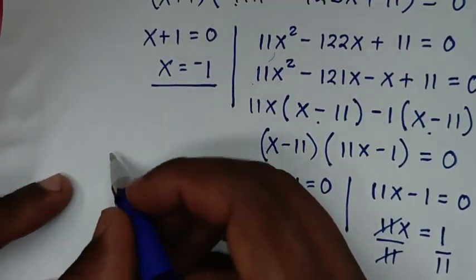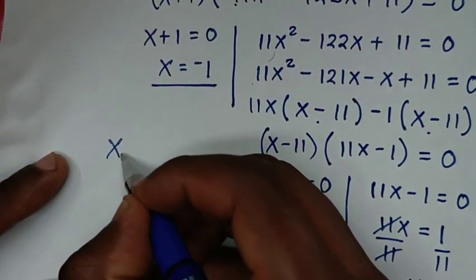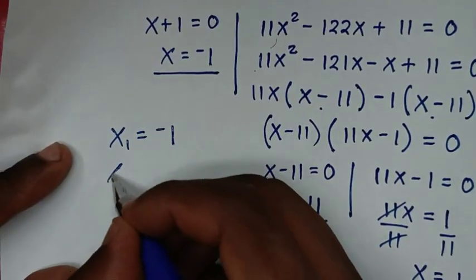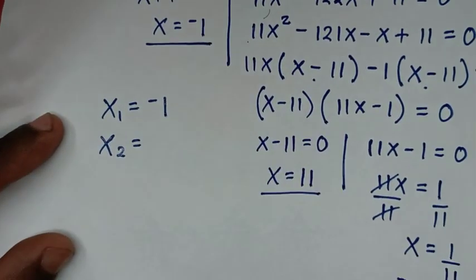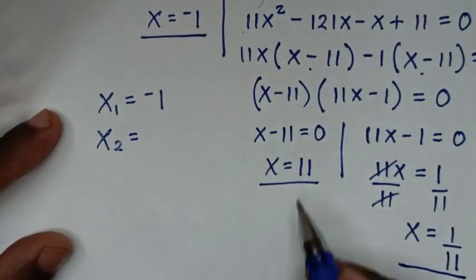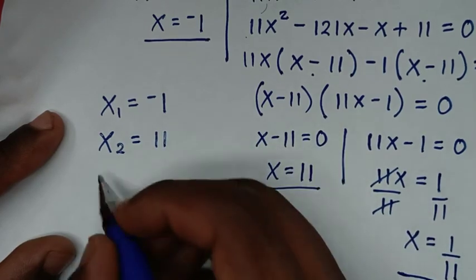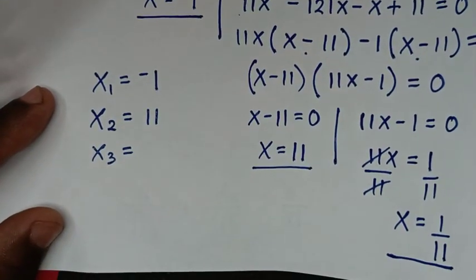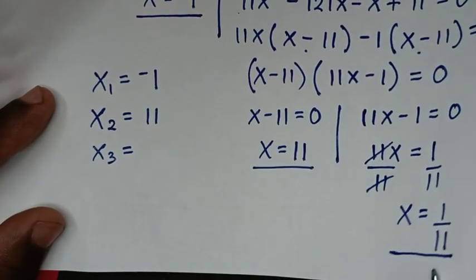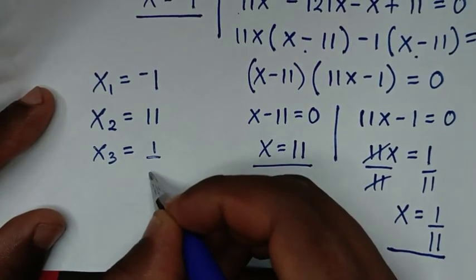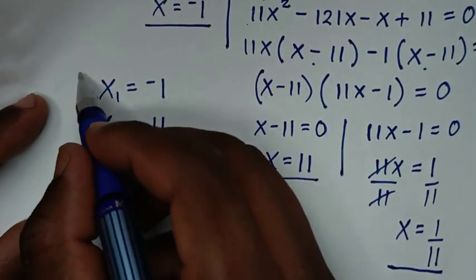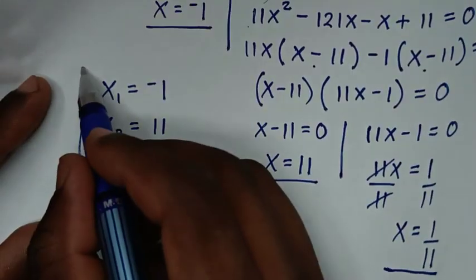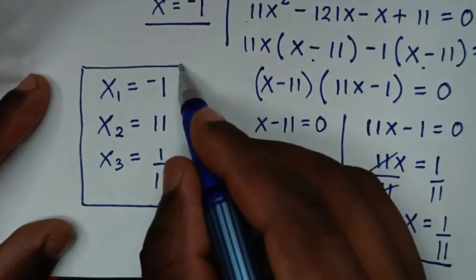Therefore, the first value of x is equal to negative 1, the second value of x is equal to 11, and the third value of x is equal to 1 over 11. These are all the values of x in this problem.